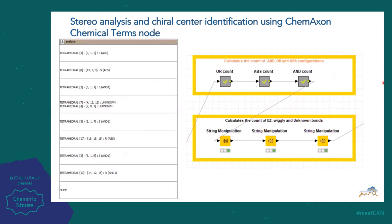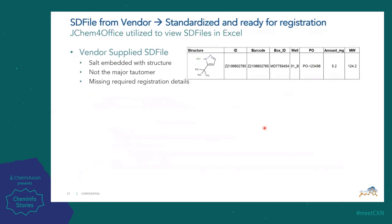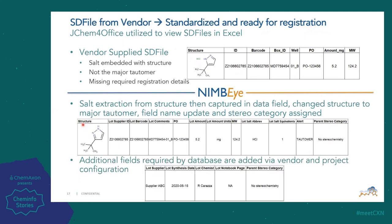We count the number of ORs, absolutes, and ANDs, as well as looking at the number of EZ, wiggly, and unknown bonds. Here's the Java code node that we use to do the stereo category assignment — based on the counts, it goes through this code to determine what that label should be. To reiterate: here's the example of what comes from the vendor with the embedded HCl, not the major tautomer, and different fields. Utilizing this technology, we're able to extract that salt and capture the data, do the stereochemistry assignment, ensure we have the major tautomer for registration, and add additional fields required for our database.